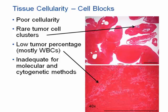Cell blocks should be evaluated for the same metrics. This particular picture has excellent cellularity and numerous tumor cell clusters, resulting in a high percentage of tumor nuclei, and this would be acceptable for most methods. In comparison, this cell block has very poor cellularity. The bulk of what we are seeing on this slide is simply red blood cells, and of the nucleated cells that are present, the vast majority are white blood cells, with only very rare tumor cells present. So not only do you have a low cellularity overall, but you also have a low tumor percent, so that this specimen would be inadequate for molecular and cytogenetic methods.